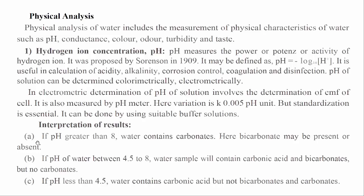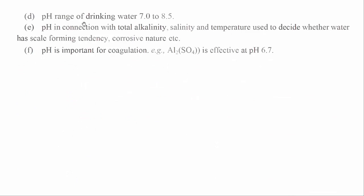Interpretation of results: A. If pH > 8, water contains carbonates; bicarbonate may be present or absent. B. If pH is between 4.5 and 8, the water sample will contain carbonic acid and bicarbonates, but no carbonates. C. If pH < 4.5, water contains no bicarbonates and no carbonates. D. pH range of drinking water is 7.0 to 8.5. E. pH in connection with total alkalinity, salinity, and temperature is used to decide whether water has scale-forming tendency, corrosive nature, etc. F. pH is important for coagulation; for example, Al2(SO4)3 is effective at pH 6.7.